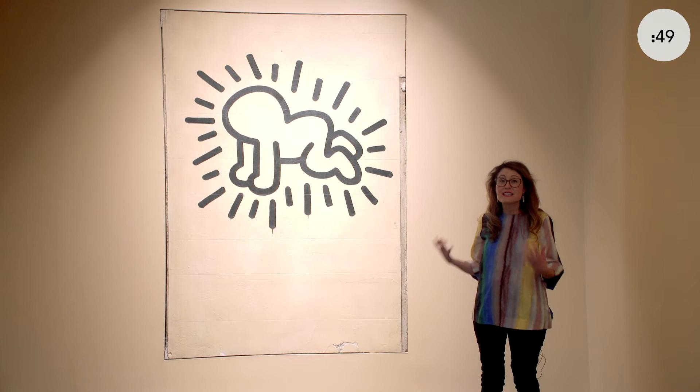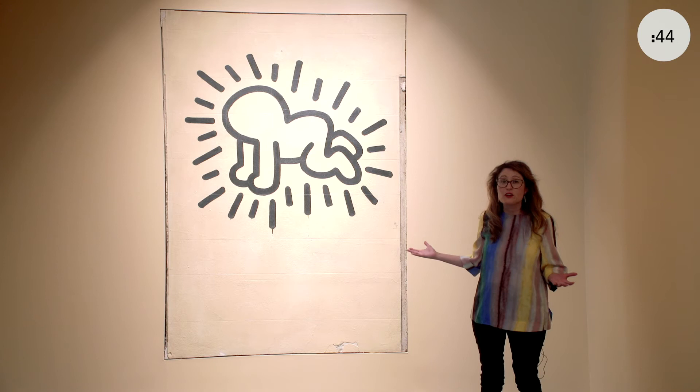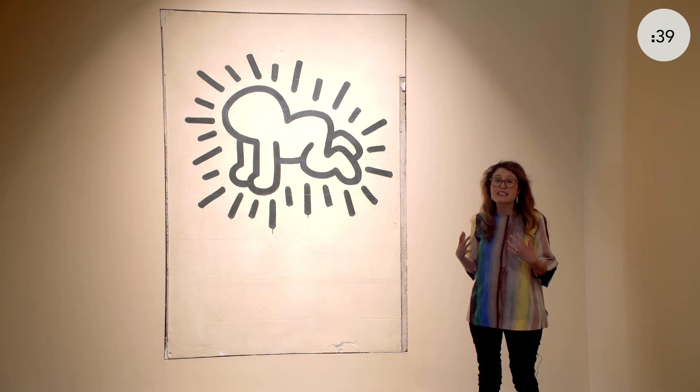This Radiant Baby figure that you see here was one of the most iconic characters associated in Keith Haring's practice, and one that he began using in association with his street art practice.